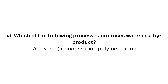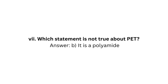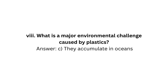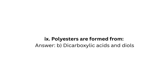Question 6: Which of the following processes produces water as a byproduct? Answer: B — Condensation polymerization. Question 7: Which statement is not true about PET? Answer: B — It is a polyamide. Question 8: What is a major environmental challenge caused by plastics? Answer: C — They accumulate in oceans.